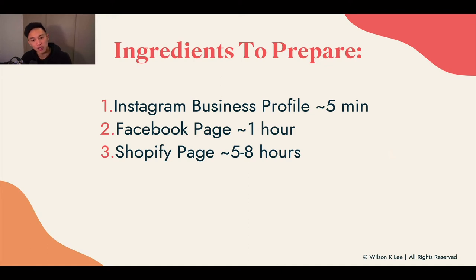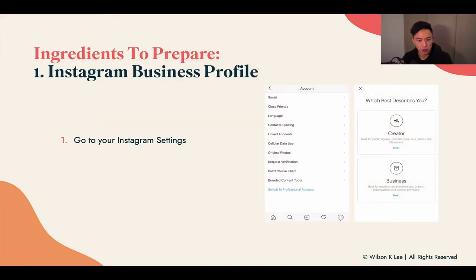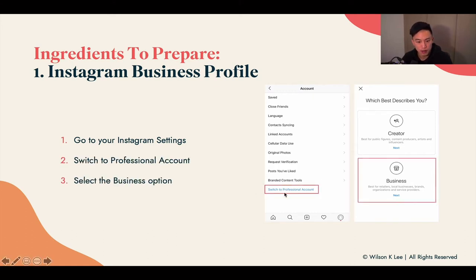Let's dive into the Instagram business profile, Facebook page, and Shopify page. For the Instagram business profile, just go to your Instagram settings and click 'Switch to Professional Account,' select the business option — and voilà, you're done. Five minutes and you're good to go.